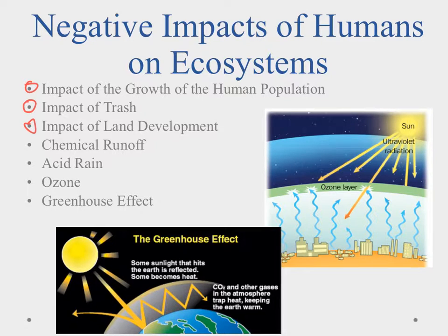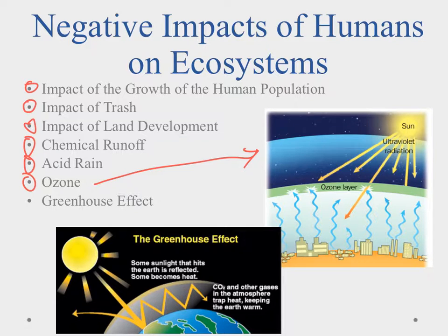Going back to pollution, we have things like chemical runoff, acid rain, and we actually produce more ozone than is necessary. Ozone forms a layer in our atmosphere and the ozone layer is very important because it blocks out ultraviolet radiation from the sun — it's kind of like the world's sunblock. By having that ozone layer we're able to have life on land. Without it, everything would have to be below water because ultraviolet radiation can't penetrate water and cause the same damage.